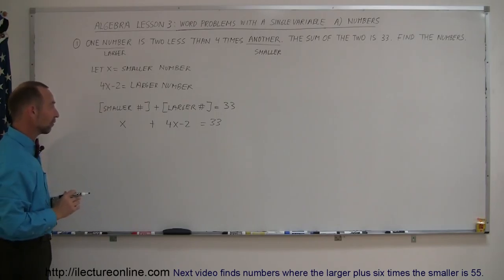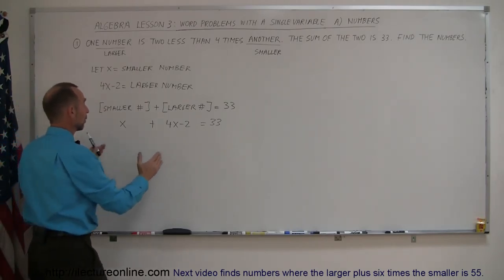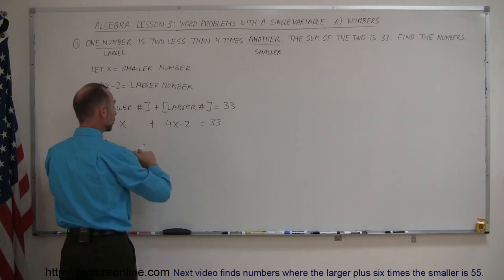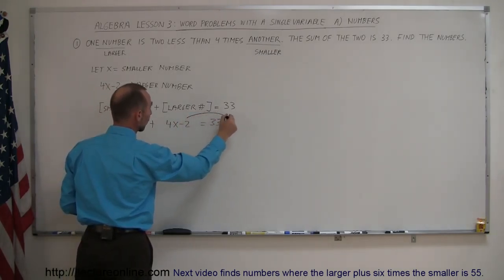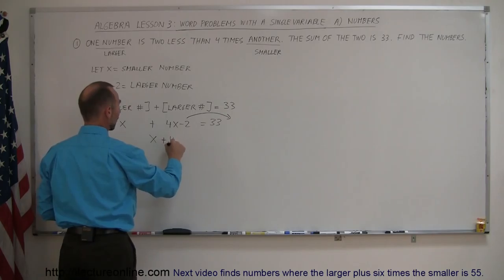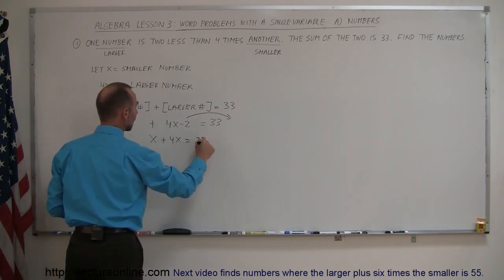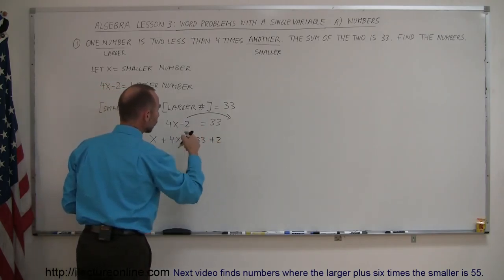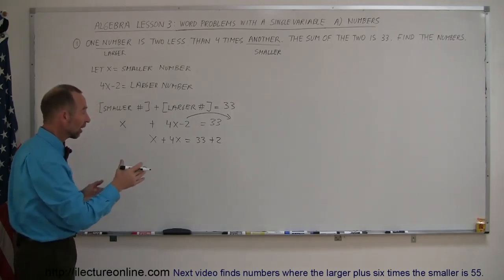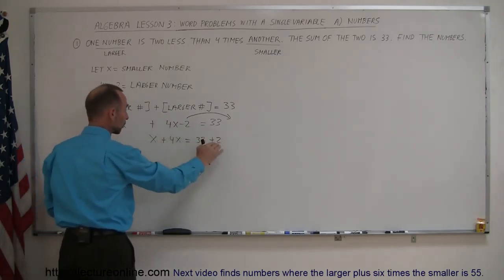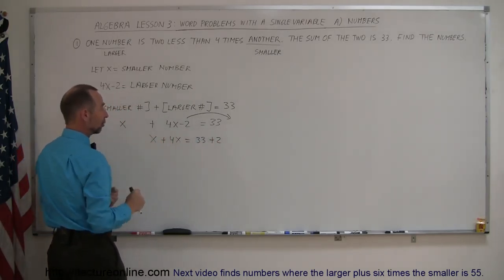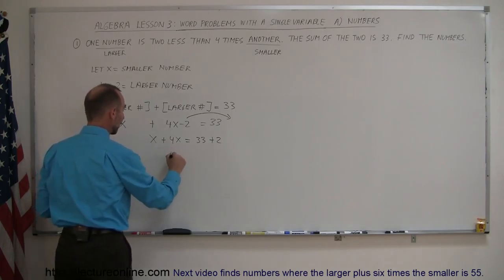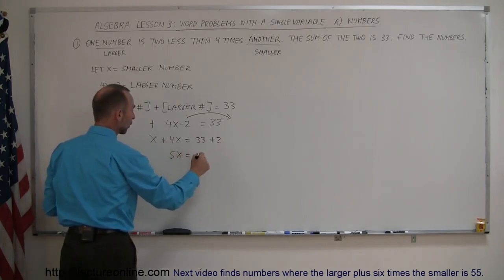All right, so solving this for x, the rule is keep all the x's on the left side of the equation, move all the numbers without the x to the right side. So this becomes x plus 4x on the left side equals 33. Now this becomes plus two, whenever you move a number to the other side, the sign changes, so the minus two becomes a plus two. Combine like terms on both sides, so x plus 4x is 5x. 33 plus 2 is 35.